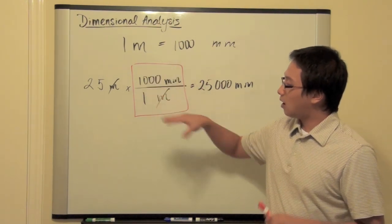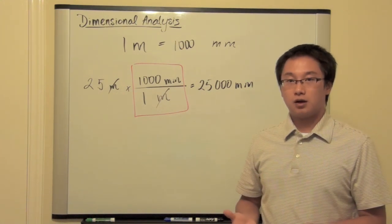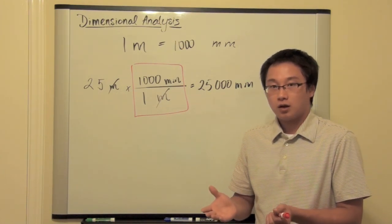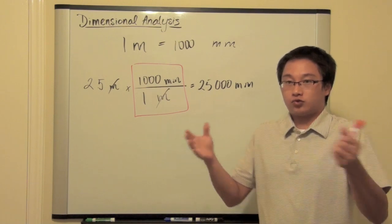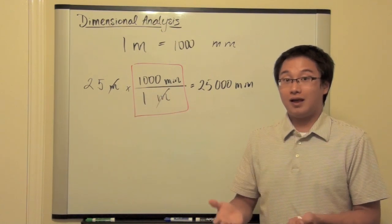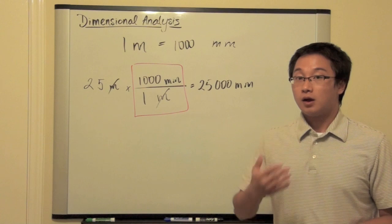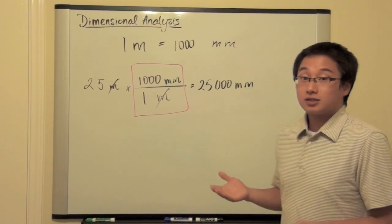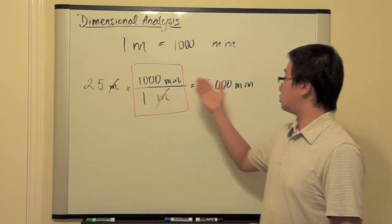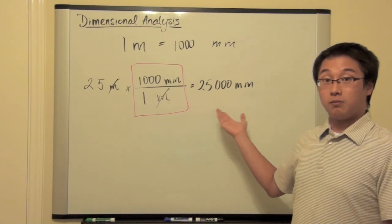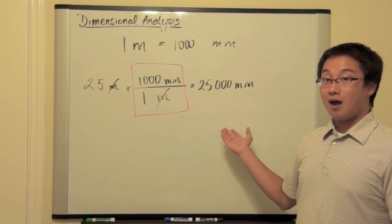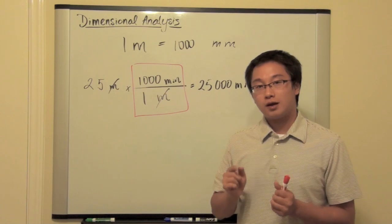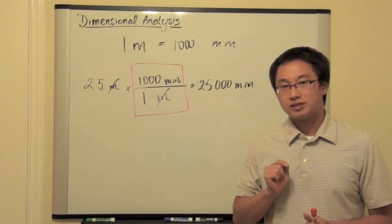Now, according to mathematics, you cannot just amplify or shrink a specific value unless it tells you to do so. Now, in this case, I'm just asking you to convert 25 meters to some number in millimeters. And now, going back to the understanding of the equal sign, what do we say?